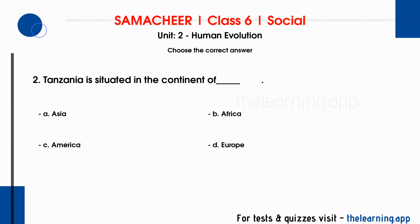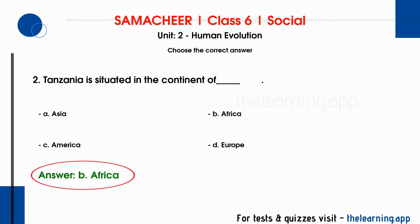Second question: Tanzania is situated in the continent of dash. Options are A: Asia, B: Africa, C: America, D: Europe. Correct answer is option B — Africa. Tanzania is a country in the African continent. Here we have the footprints of our ancestors.